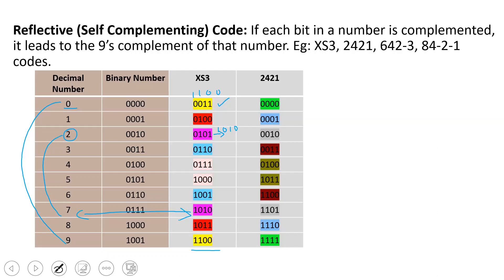This is called a self-complementing or reflecting code. For example, 2421 is self-complementing. The 9's complement of 4 is 5. In 2421, 4 is represented as 0110, and 5 is represented as 1011 — which is exactly the 1's complement of 0110. XS3, 2421, 642-3, and 84-2-1 are all self-complementing codes.